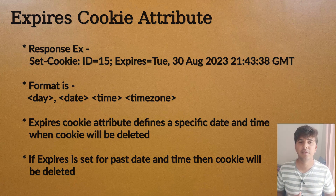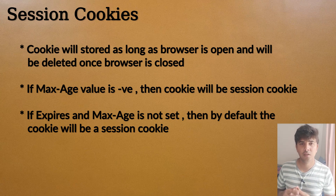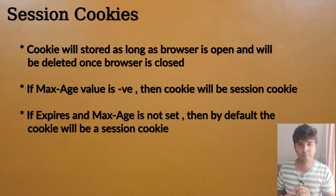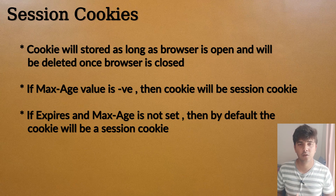Now let's discuss session cookies and persistent cookies. A session cookie is a cookie that is deleted as soon as the user closes the browser. If the browser is open then the cookie will be there, but as soon as the user closes the browser those cookies will be deleted. These types of cookies are known as session cookies — they are valid only while the browser is open.